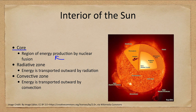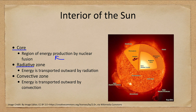In stars like our Sun, energy is transferred either by radiation in the inner region just past the core, where energy is transferred by photons. However, those photons don't travel through quickly, because they are constantly being absorbed and re-emitted. So it can take them a very long time to work their way through that radiative zone.